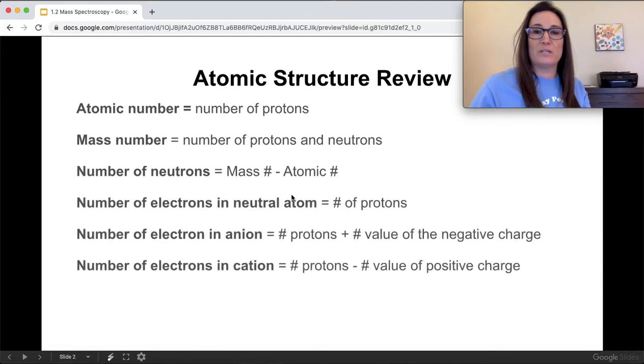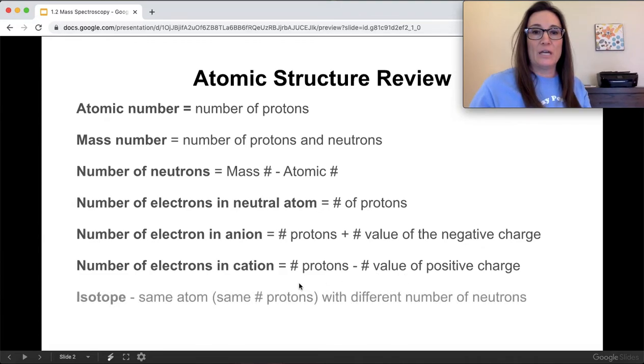You also have to know the ways to find the number of electrons. For a neutral atom, it's just the same as the protons. But if you have an anion, the number of electrons goes up, which you add into the value of the negative charge. You still have the same number of protons, you just gain electrons. For cations, you do just the opposite and subtract that numerical value. You don't gain or lose protons, you gain or lose electrons.